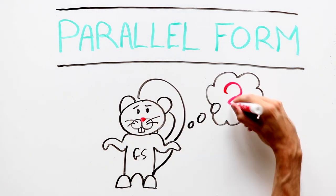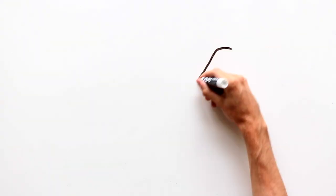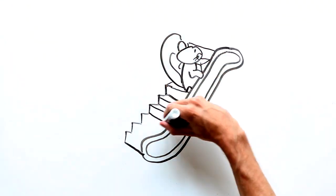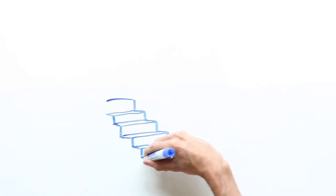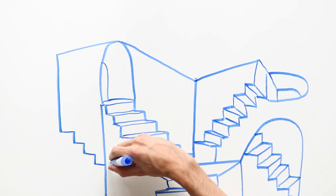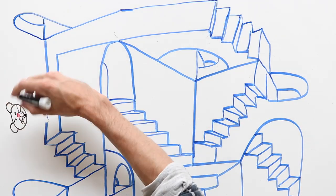But why does any of this matter? Well, when linked elements are written in parallel form, everything flows smoothly. But when they aren't, things can get really messy and really confusing.